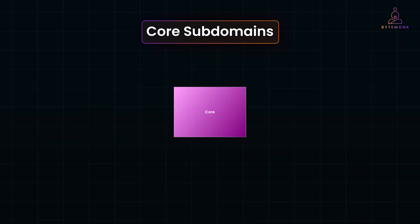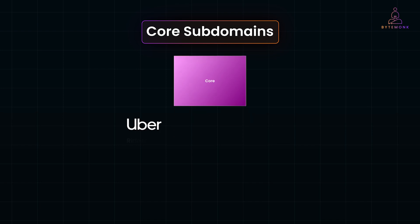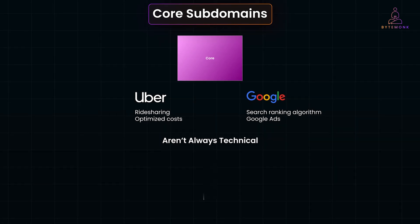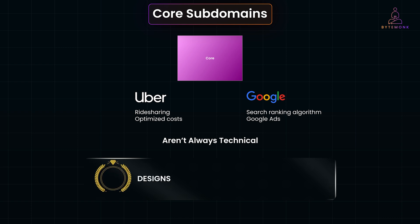Core subdomains differentiate a company from its competitors. They involve innovations, optimizations, or intellectual property that directly impact profitability. For instance, Uber initially disrupted transportation with ride-sharing and later optimized costs by matching riders heading in the same direction. Google's search ranking algorithm is a core subdomain, as it drives traffic to Google Ads, a major revenue source. Core subdomains aren't always technical — a company's edge can come from unique expertise or creativity. A jewelry maker's designs are its core subdomain, not its online store.